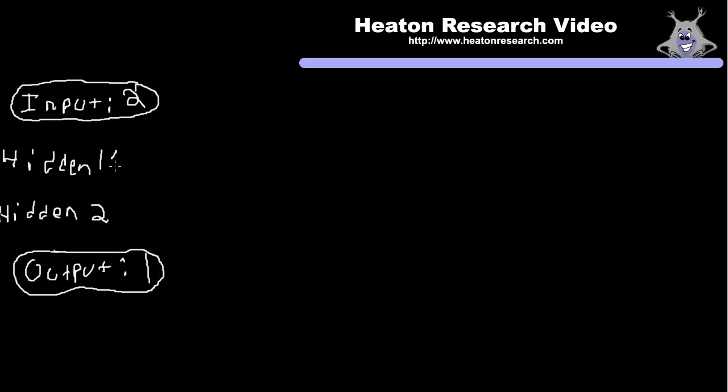Two hidden layers will still learn the exclusive OR, it's just going to be something of overkill. So we're going to have hidden one, that's just the first hidden layer, and hidden two. And that's the second hidden layer. Now just like the inputs and the outputs, these hidden layers also have neuron counts. So we're going to say that the first hidden layer has three, the second hidden layer has two.